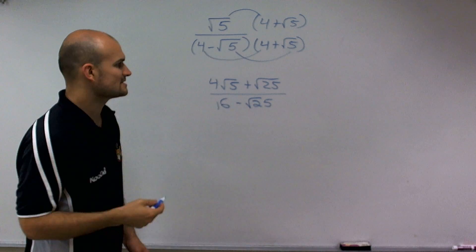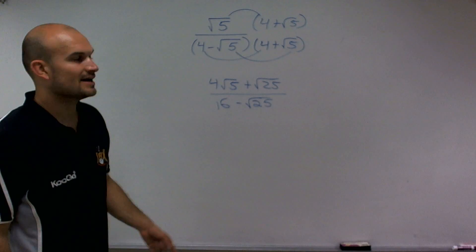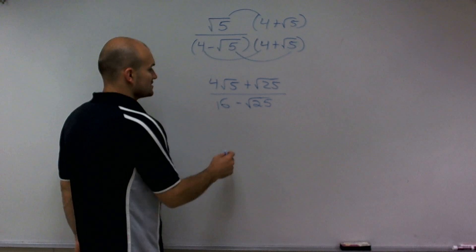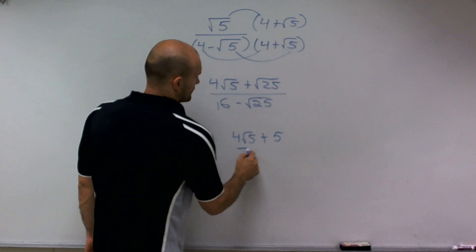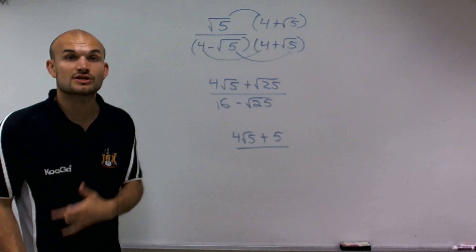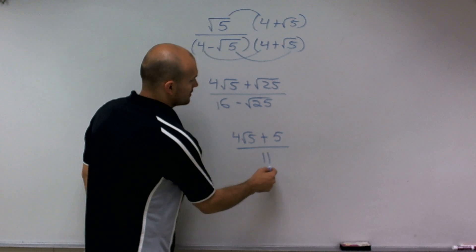So now, let's go ahead and simplify this solution a little bit. 4 times square root of 5, this is going to remain 4 times square root of 5. However, the square root of 25 I can reduce as 5. Then, I can again reduce square root of 25, which is going to give me 5. Well, 16 minus 5 is going to give me 11.